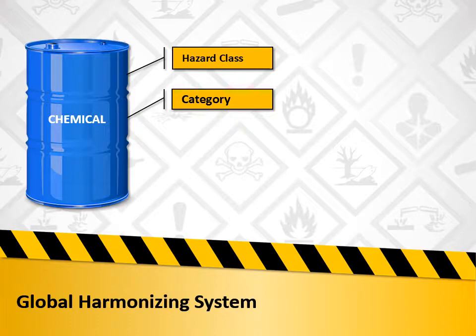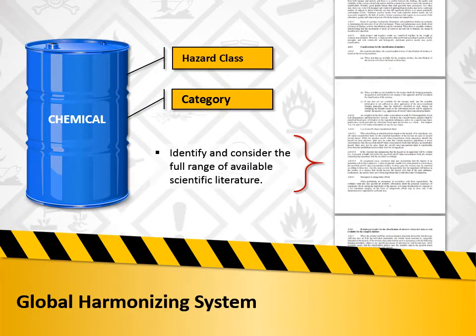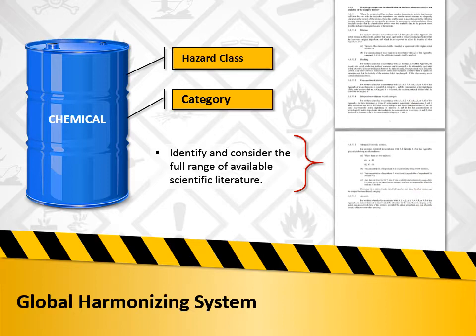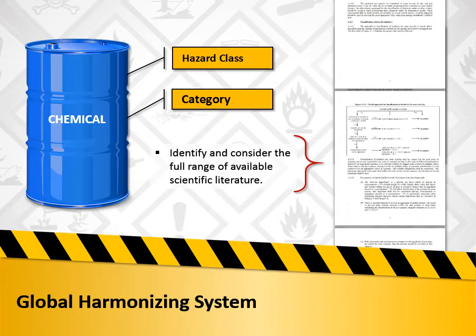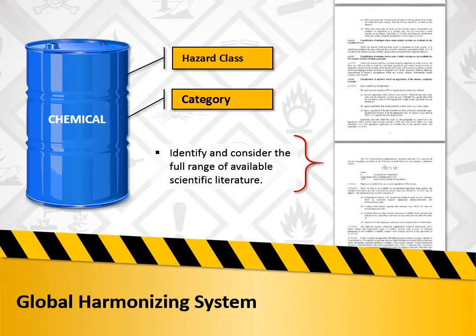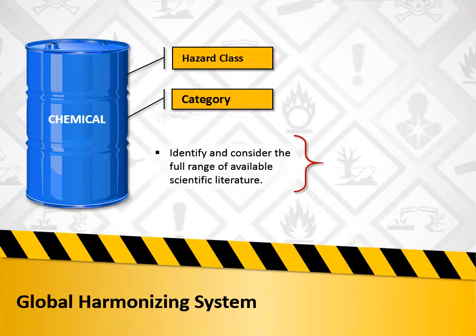Employers are not required to classify chemicals unless they decide not to rely on the manufacturer's classification. Anyone classifying chemicals must identify and consider the full range of available scientific literature and other evidence concerning the potential hazards. There is no requirement to test the chemical to determine how to classify its hazards.